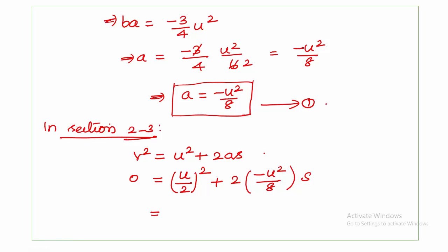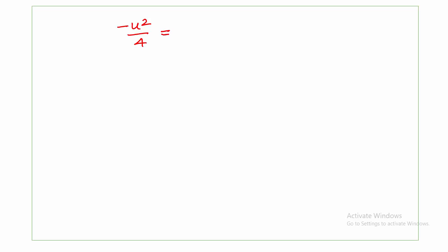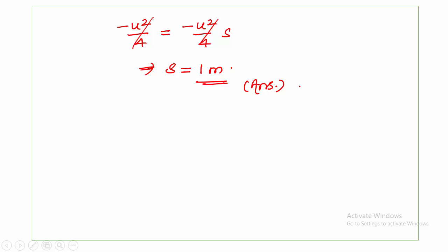So 0 = u²/4 − (u²/4)s. Solving this, s = 1 meter. The distance traveled is 1 meter. This is the answer. This is all about the problem.